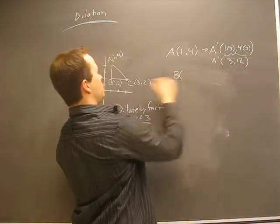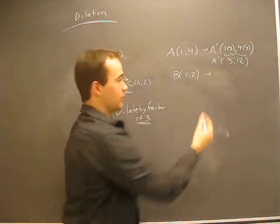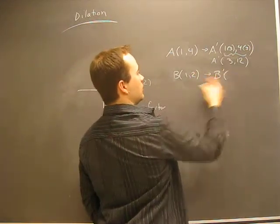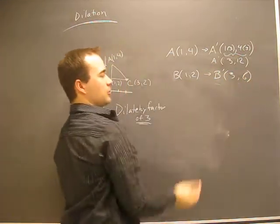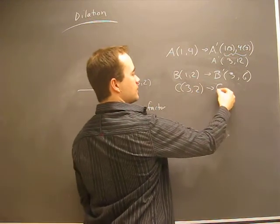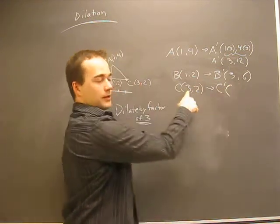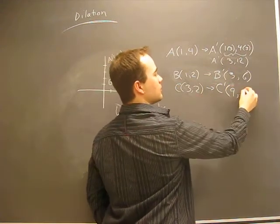Okay, likewise, B (1, 2), I mean, I don't have to go through the math here, but B prime will be, okay, one times three is three, two times three is six. There's B prime, and C (3, 2), C prime will be three times three is nine. That's a funny looking bracket. And two times three is six.